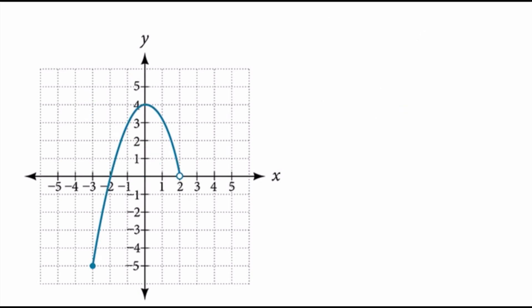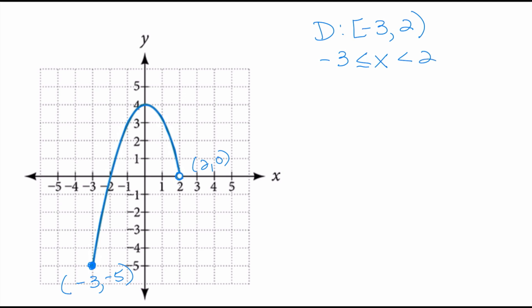In this next problem, the domain is left to right. From the left there's a clear starting point — it's like part of a parabola going up then down. There's an open circle at the point 2 comma 0, and the starting point is negative 3 comma negative 5. My domain starts at negative 3, including it, until I get to positive 2. I do not include positive 2 because there's no other place where x equals 2. In inequality notation: all x-values greater than or equal to negative 3 and less than positive 2.